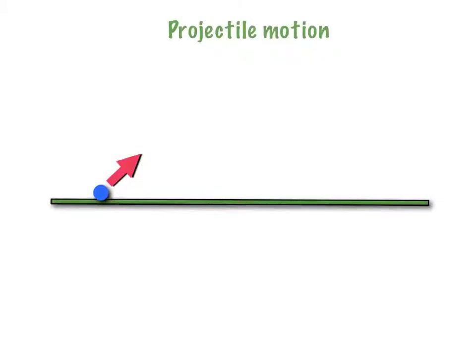Hello, today we're going to make a quick review of projectile motion. Projectile motion is simply the type of motion in which gravity is the only force acting on the object. Let's say that we have this blue ball over here, and it's going to be kicked. So the trajectory that it's going to describe is going to be more or less this one.